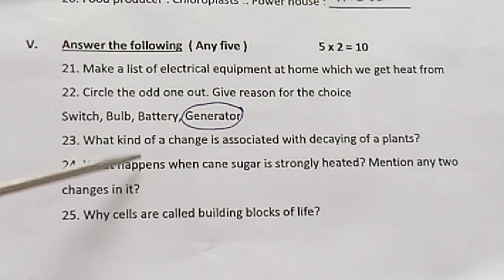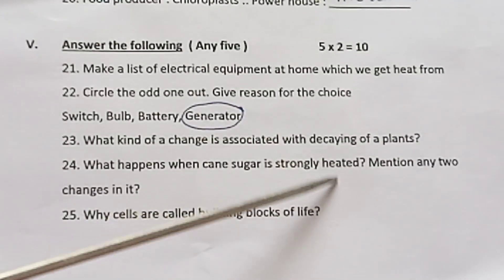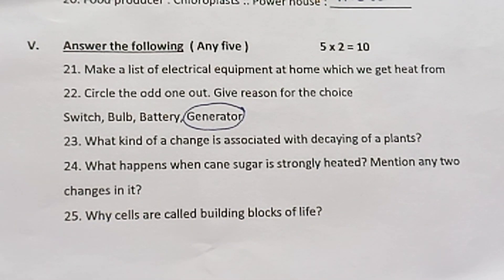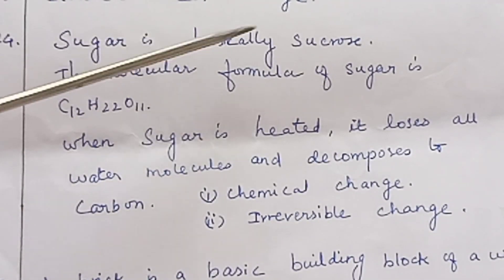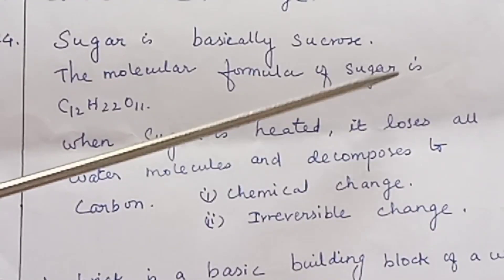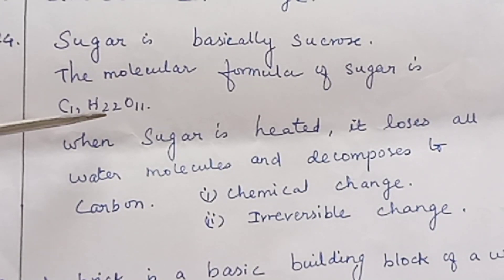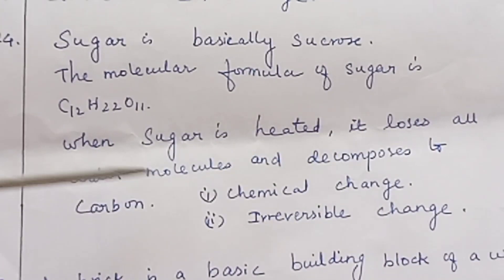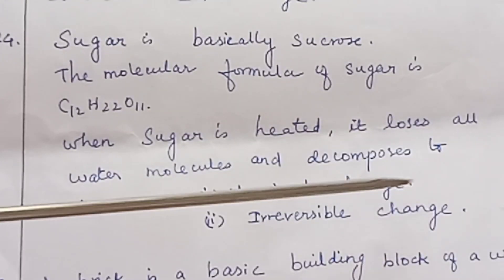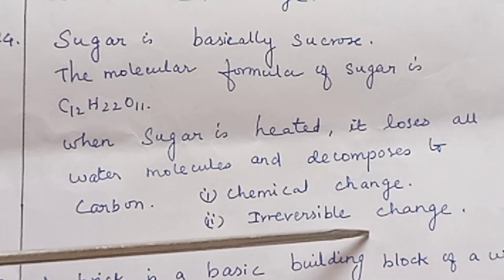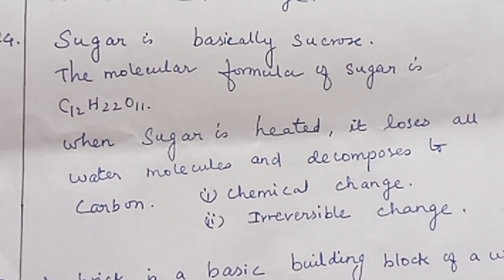Question 24: What happens when cane sugar is strongly heated? Mention any two changes. Sugar is basically sucrose. The molecular formula of sugar is C12H22O11. When sugar is heated, it loses all water molecules and decomposes to carbon. First: chemical change. Second: irreversible change.